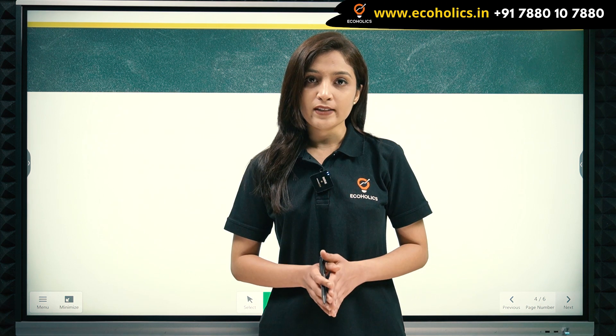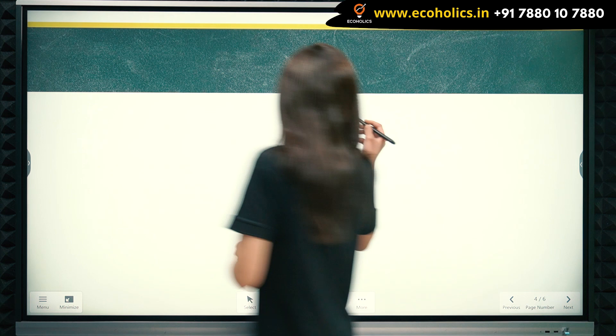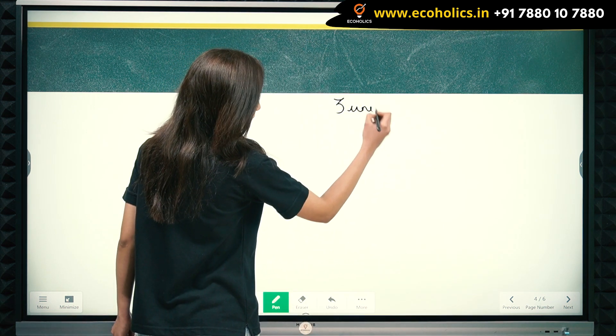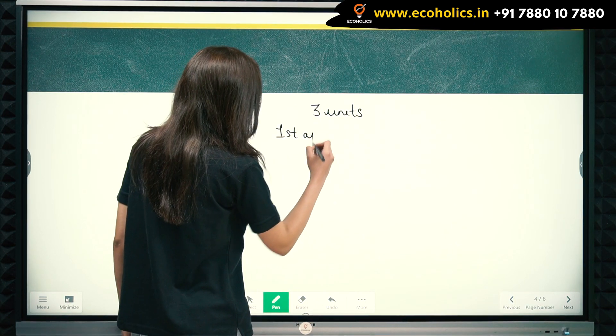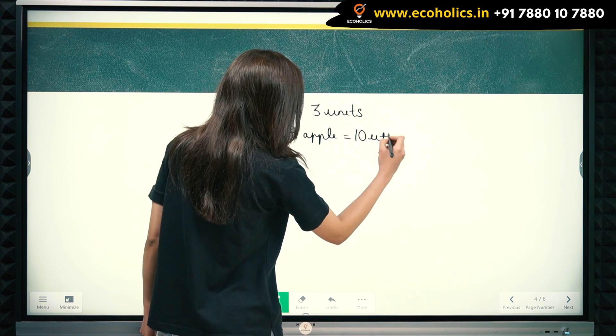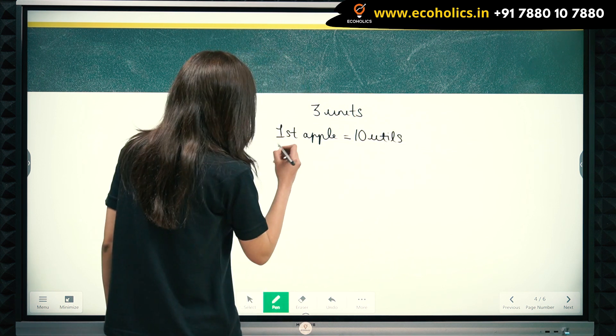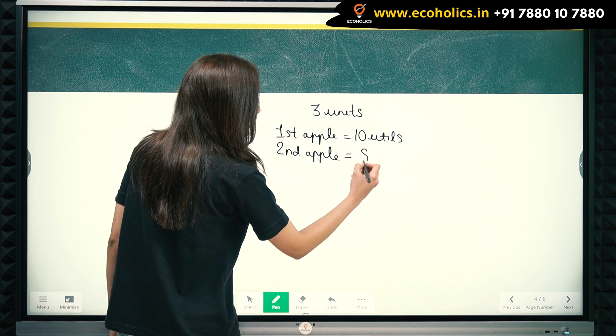What is total utility? Total utility is the sum of total satisfaction that a consumer gets from consuming all units of a commodity. Let's understand total utility with the help of an example. Let's say a consumer consumes three units of apple. The first apple gives him ten utils of satisfaction, the second apple gives him eight utils of satisfaction.